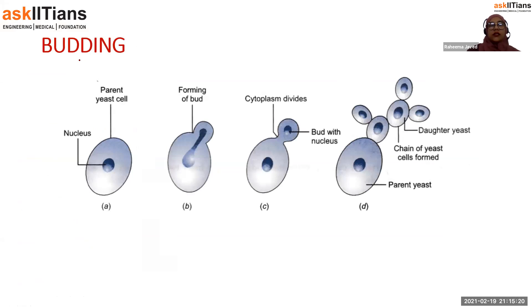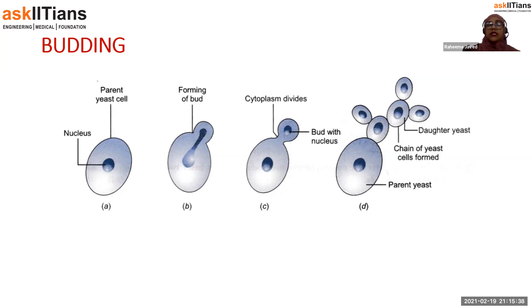The first process is budding. Budding is the process where a tiny little outgrowth develops on the parent's body. This outgrowth then grows more and more and finally it buds off — that means it gets cut off from the parent's body and develops into a new individual independently.